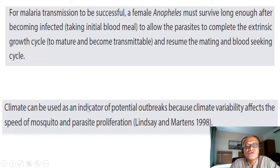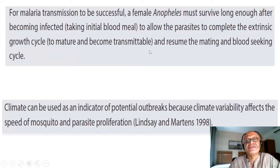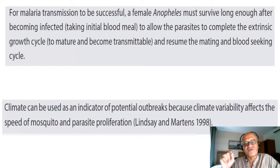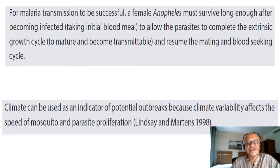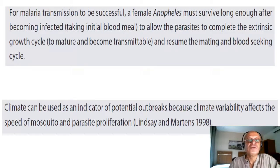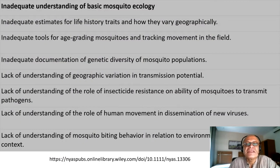Climate can be used as an indicator of potential outbreaks because climate variability affects the speed of mosquito and parasite proliferation. Here you're jumping all these steps and looking for empirical relations between climatic parameters and mosquito and parasite proliferation. It often depends on how the mosquito population has been estimated versus how disease outcome has been used as an indicator of mosquito proliferation or malaria outcome.